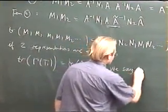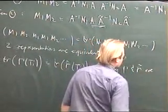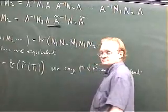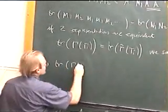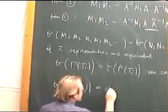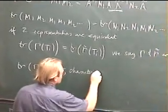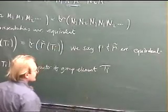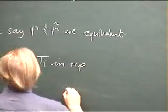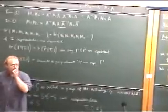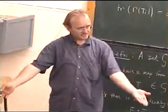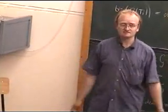we say gamma and gamma tilde are equivalent. We introduce a name for this. The trace of gamma tilde is called the character of group element ti in representation gamma. And we say that the condition that the two representations are equivalent is that they have the same character system. So if you calculate the characters for all of the group elements, they will be equal to the characters of the other representation.